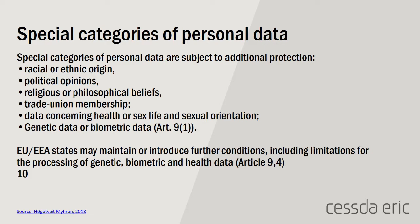In GDPR there is a mention of special categories of personal data. These include information on racial or ethnic origin, political opinions, religious or philosophical beliefs, trade union membership, data concerning health, sex life, sexual orientation, and also genetic data or biometric data. This could be further defined by national legislation, but in social sciences we tackle a lot of these categories.